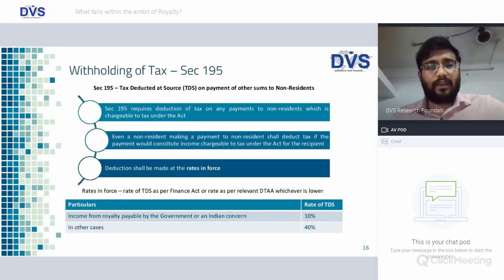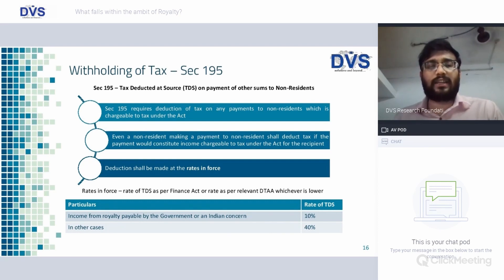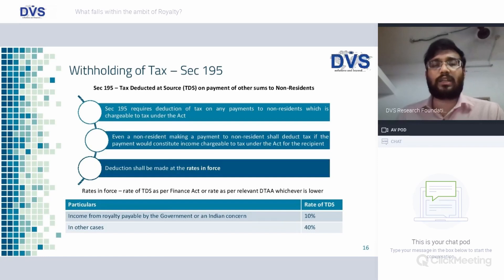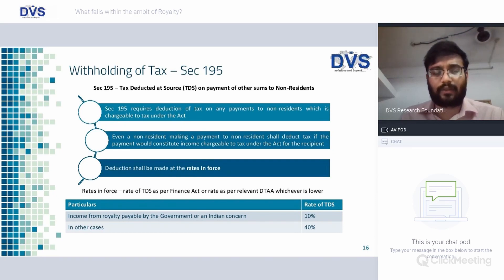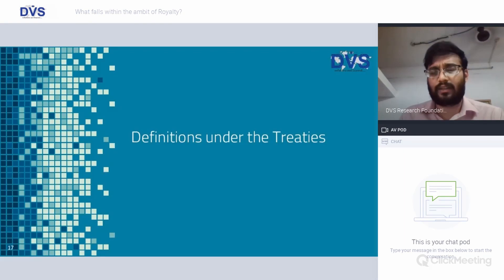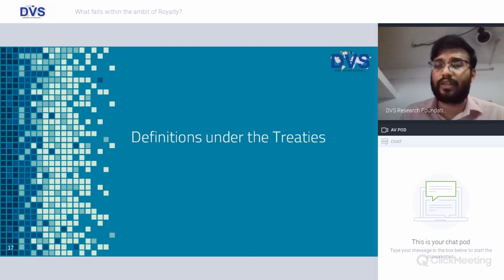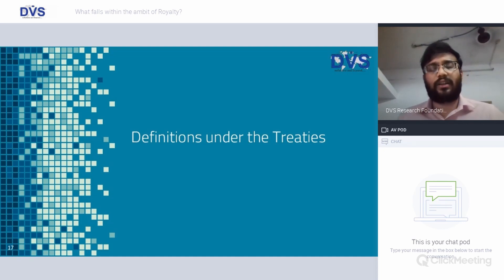Withholding of tax — Section 195 requires deduction of tax on any payments to non-residents that are chargeable to tax. Even an Indian concern making a payment to a non-resident shall deduct tax if the payment would constitute income chargeable to tax in India, at the rates in force. Income from royalty payable by the government or an Indian concern: 10 percent; in any other case: 40 percent. However, DTAA may come into picture in case a reduced rate of tax is available.